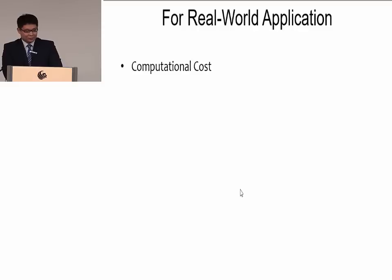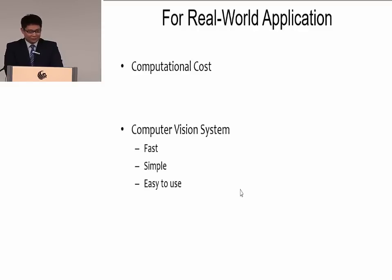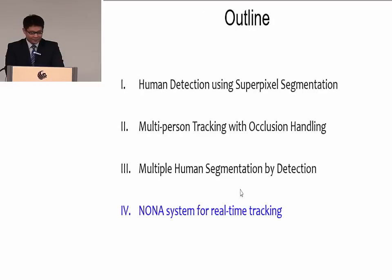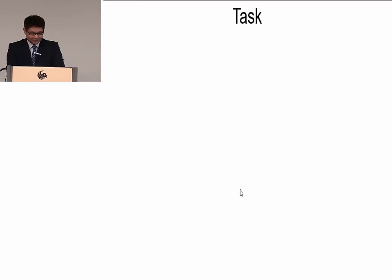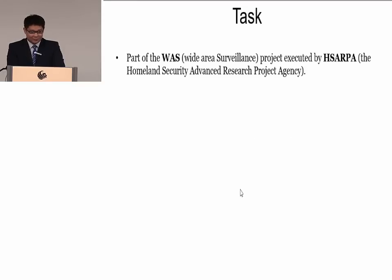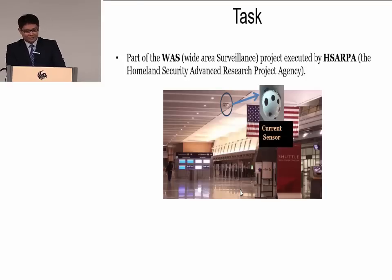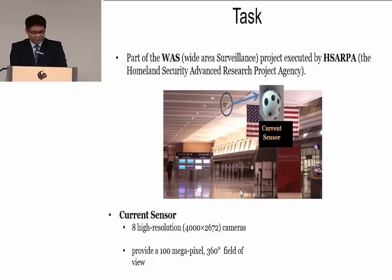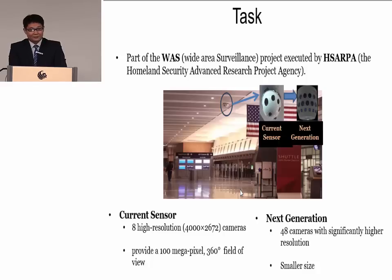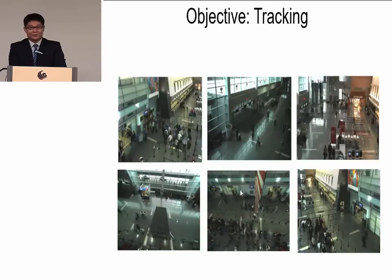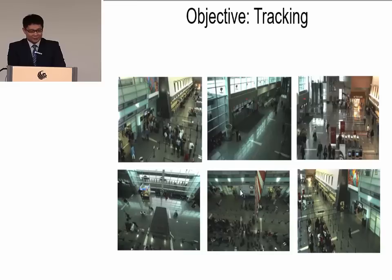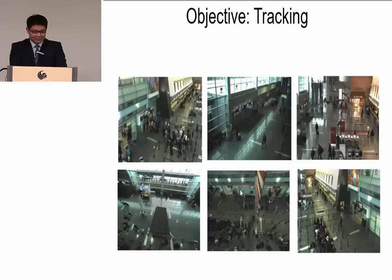For real-world applications, the primary consideration is computational cost. We desire a computer vision system that is fast, simple, and easy to use. This is the last piece of my work: the NUNA system for real-time tracking. NUNA is part of a WAS project executed by HRL. This figure shows the Boston Logan Airport terminal where they install a high-resolution sensor. The current sensor has eight high-resolution cameras providing a 100-megapixel 360-degree field of view. They are developing a next-generation sensor with 48 cameras and even smaller size. The objective of NUNA is to track persons in these high-resolution videos at different viewpoints.